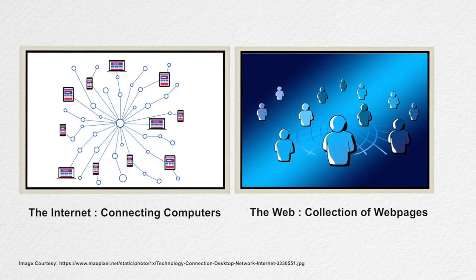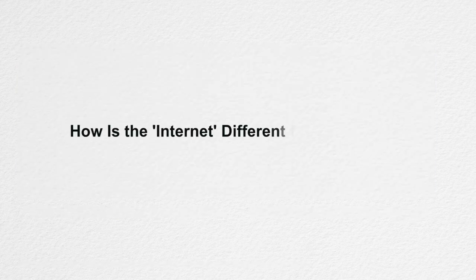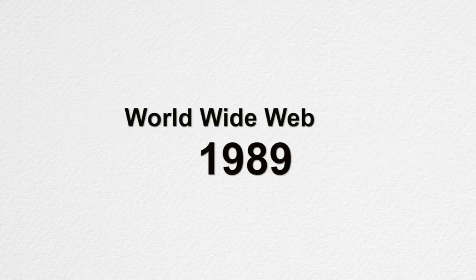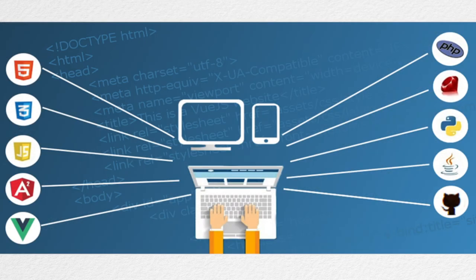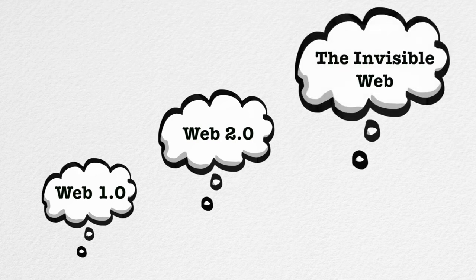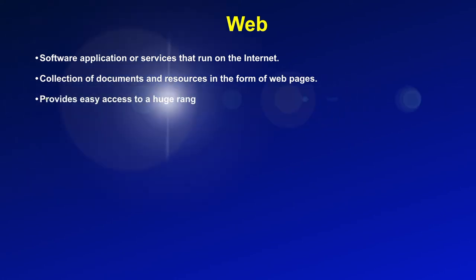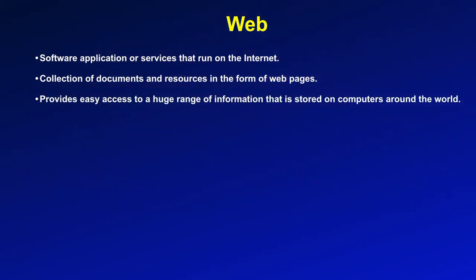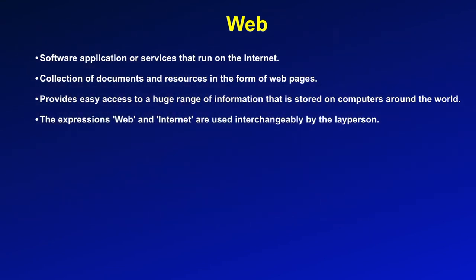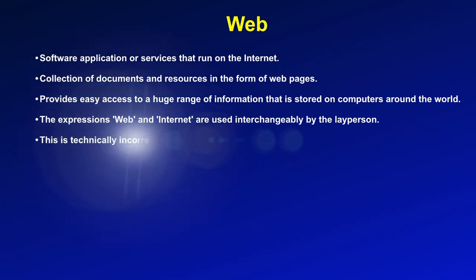We use the terms internet and World Wide Web interchangeably, but they are different. In 1989, a large subset of the internet was launched as the World Wide Web. The web is a massive collection of HTML pages that transmit through the internet's hardware. You will hear expressions like web 1.0, web 2.0, and the invisible web to describe these billions of web pages. The web is one software application or service that runs on the internet — a collection of documents and resources in the form of web pages providing easy access to a huge range of information stored on computers around the world. The expressions web and internet are used interchangeably by a layperson, but this is technically incorrect as the web is contained by the internet.